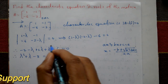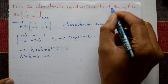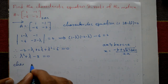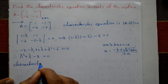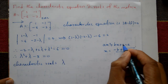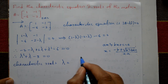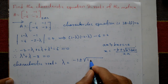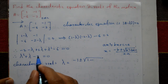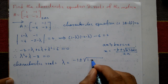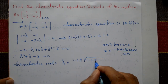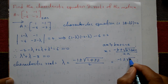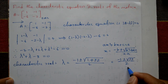This is the characteristic equation. Now finding the characteristic roots (λ values): λ = (−b ± √(b² − 4ac)) / 2a = (−1 ± √(1 − 4(1)(−8))) / 2 = (−1 ± √(1 + 32)) / 2 = (−1 ± √33) / 2. This is the required solution.